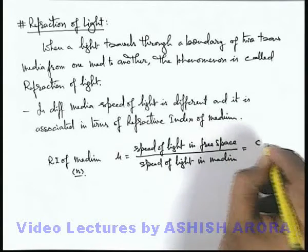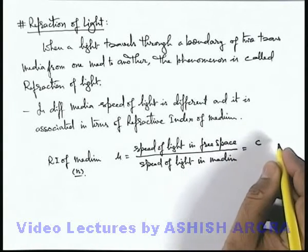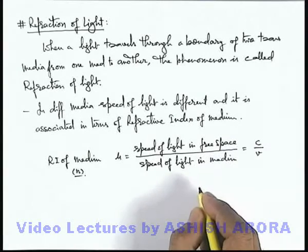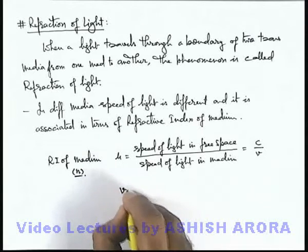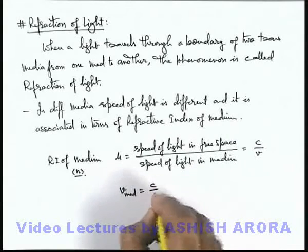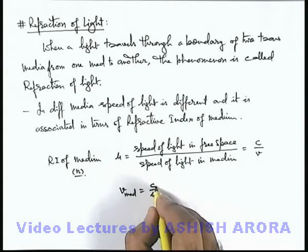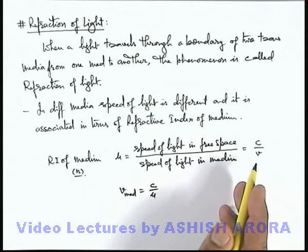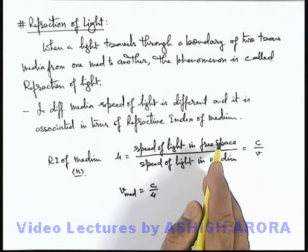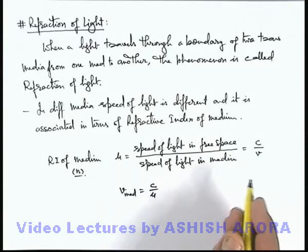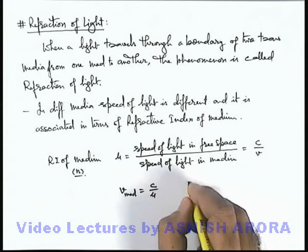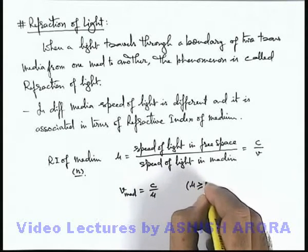We know that the speed of light in free space is given by 3 into 10 to the power 8 meters per second, denoted by c. And say if in a given medium the speed of light is v, then the speed of light in a given medium we can write as c by mu. In every medium the speed of light is less compared to that of free space, because of non-resonating oscillations of the medium particles. So the value of mu is always greater than or equal to 1.